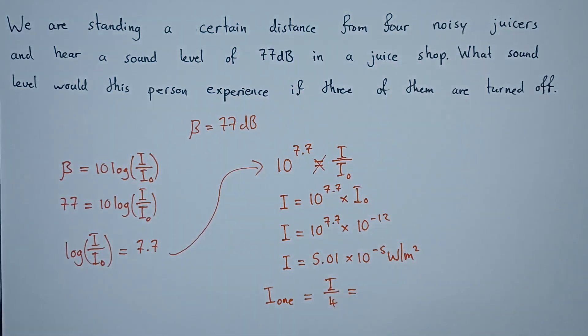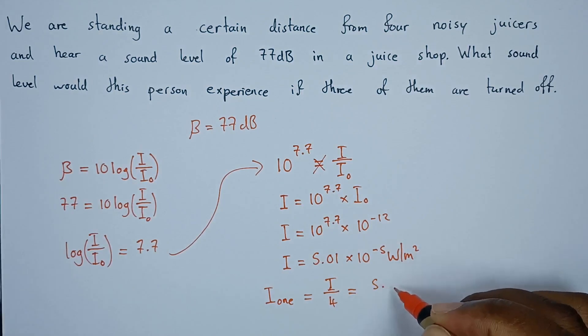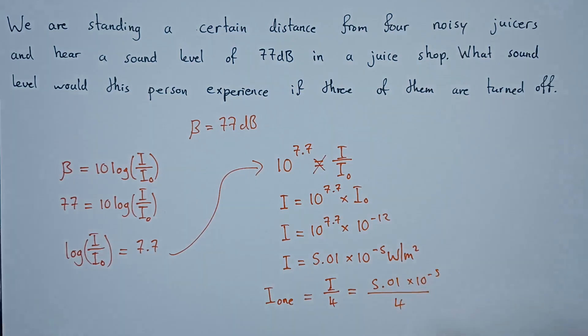There are four of them, so 5.01 times 10 to the power negative 5 divided by 4 gives us the value 1.25 times 10 to the power negative 5 watts per square meter. This is the intensity for one juicer. I hope that makes sense, thank you very much.